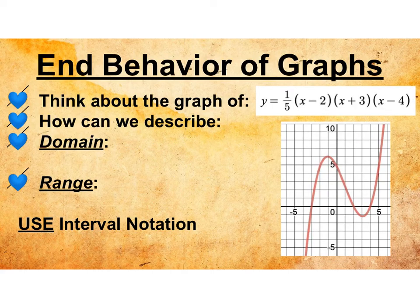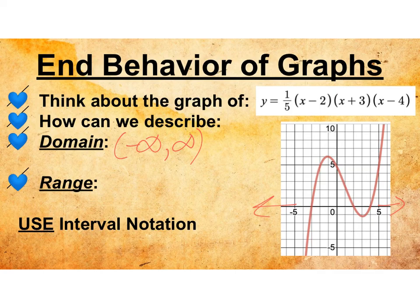Going back to our factored polynomial and describing the domain and range: x is going to go forever in both directions, so the domain is negative infinity to positive infinity. For the range, one arrowhead keeps going all the way up and the other goes all the way down, so the range is also negative infinity to positive infinity.